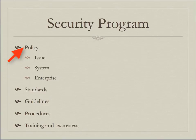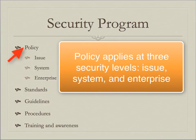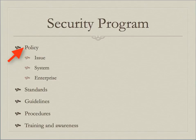Policy applies security at three levels: issue, system, and enterprise. Issue is how a user should behave in a specific situation. System applies to a system like payroll or financials and deals with technology, people issues, and processes specific to that system. Enterprise policies apply to the entire enterprise regardless of issue or system involved.